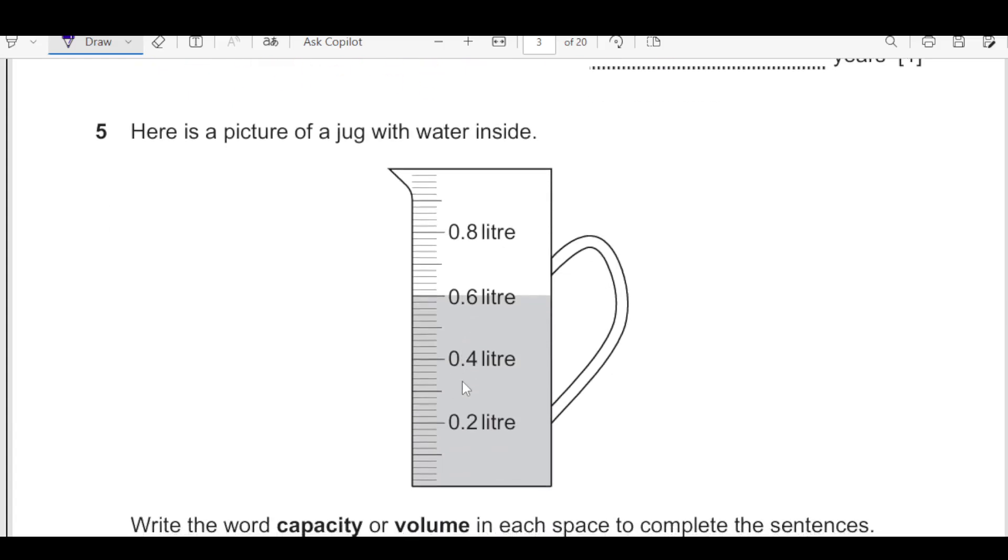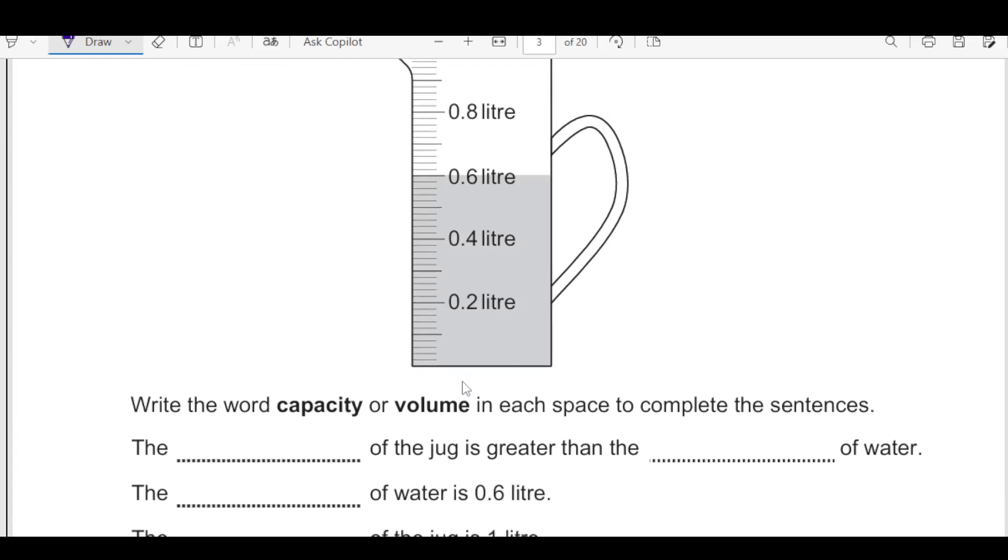Number 5 here is a picture of a jug with water inside. You can see there is a water level we have shown here. Write the word capacity or volume in each space to complete the sentence. The dash of jug is greater than the dash of water. Container always has a capacity. So jug has a capacity. We will write down here capacity.